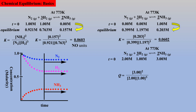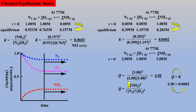Then we can predict the direction of the shift. The Q value is 4.50, which is greater than the known K value at this temperature. An easy way to predict shift is to abstractly imagine that the Q value will strive to become the K value — the reaction will adjust to afford equilibrium concentrations such that the K value of 0.0602 is obtained. For this to happen, the numerator has to become smaller and the denominator needs to become larger. Concentrations of products are in the numerator and they need to decrease, which is a shift to the left, away from products.